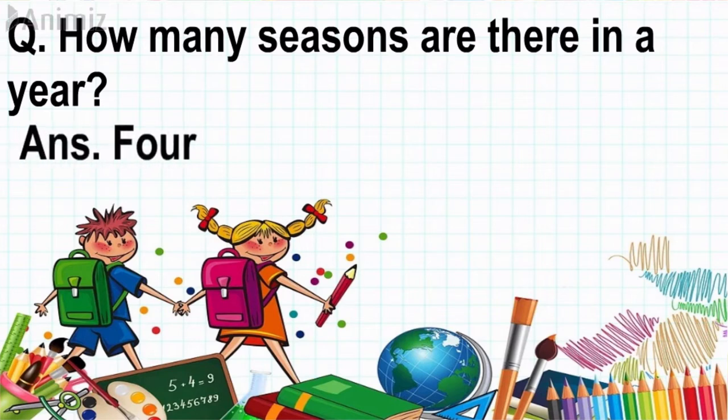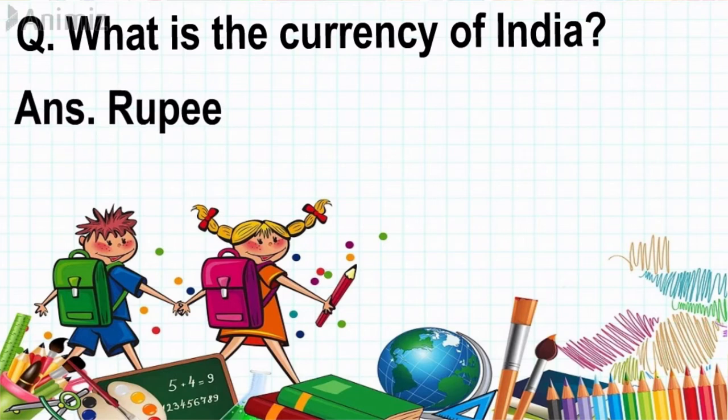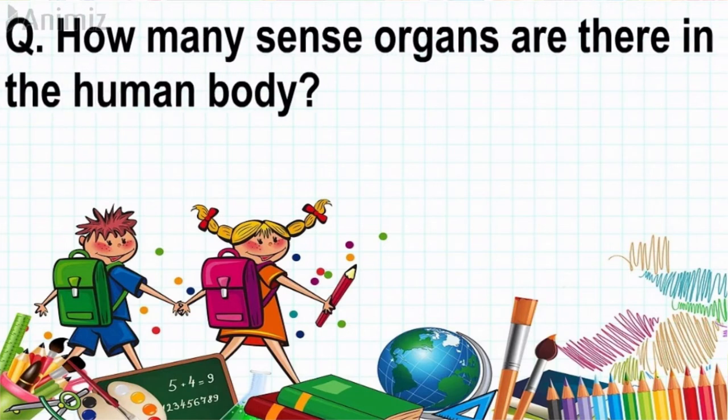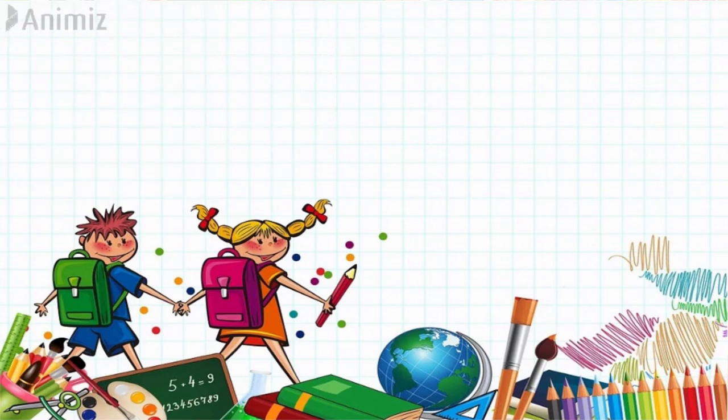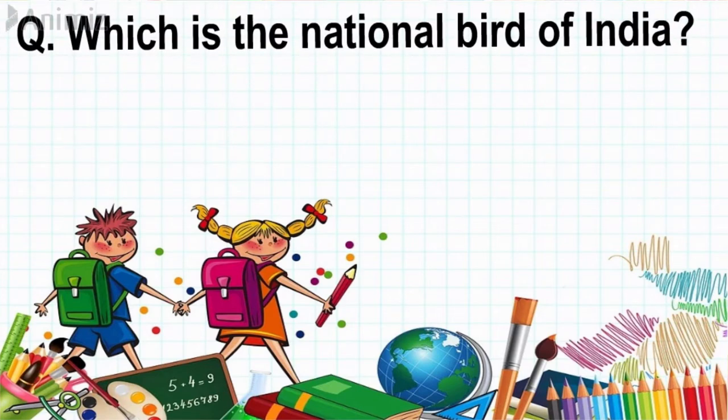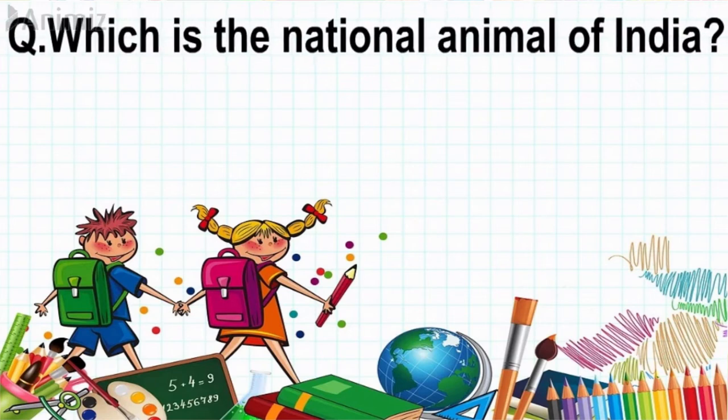Answer: Four. Question: What is the currency of India? Answer: Rupee. Question: How many sense organs are there in the human body? Answer: Five. Question: Which is the national bird of India? Answer: Peacock. Question: Which is the national animal of India?